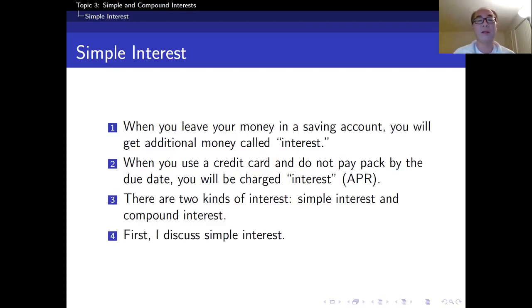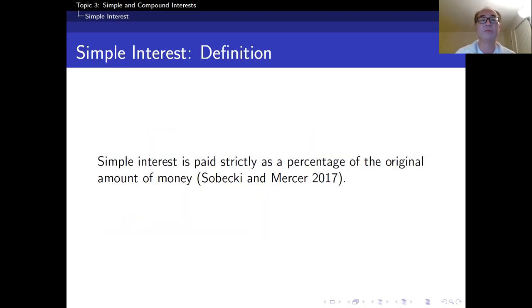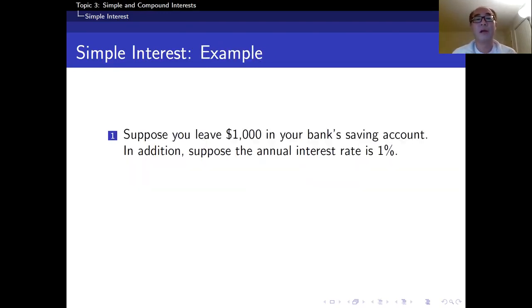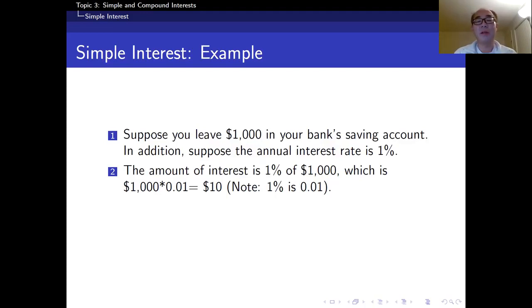First, I'll discuss simple interest. Here's a definition from the textbook: simple interest is paid strictly as a percentage of the original amount of money. Here's an example. Suppose you leave $1,000 in your bank's saving account. Also suppose that the annual interest rate is 1%. The amount of interest is 1% of $1,000, which is $1,000 times 0.01, which equals $10.